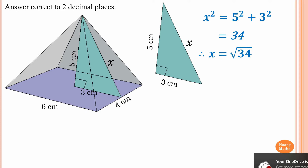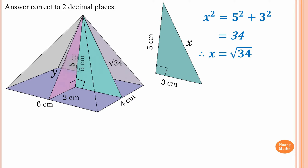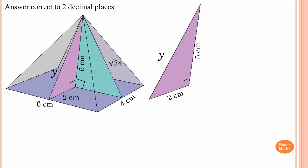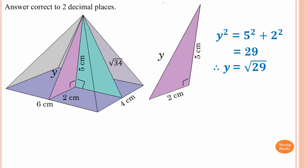So x = √34. I'll leave it in exact form — it makes it easier. Now we construct a triangle on the front. y is opposite the right angle, so it's the hypotenuse. y² = 5² + 2², which gives 29, so y = √29. I leave it in exact form so I don't have to write decimals, and it's easier when finding the area later.